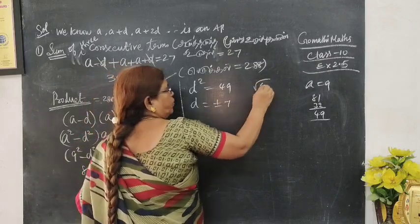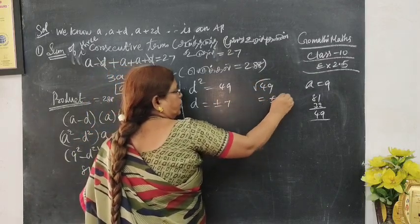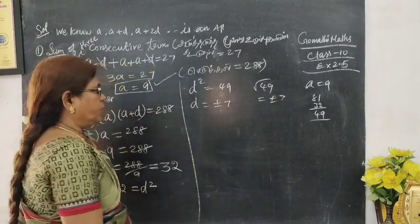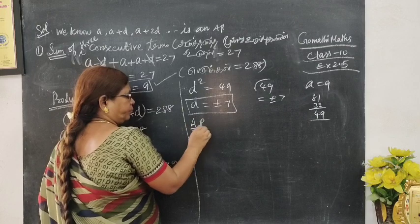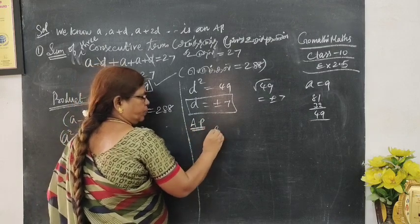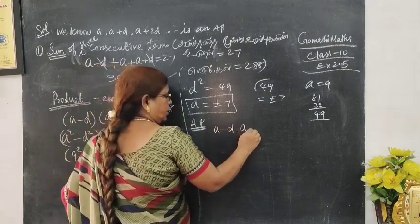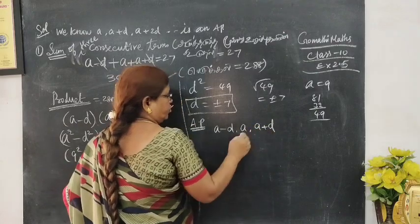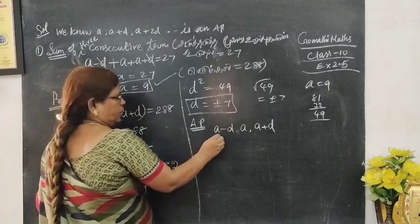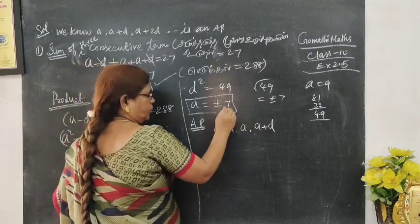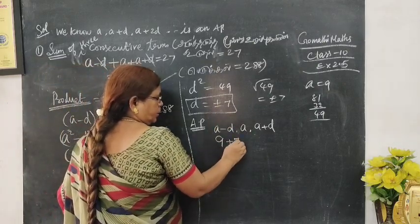So d equals plus or minus 7. Remember, d squared equals 49, so we get two values. a equals 9 and d value is first plus 7, and then d value is minus 7.